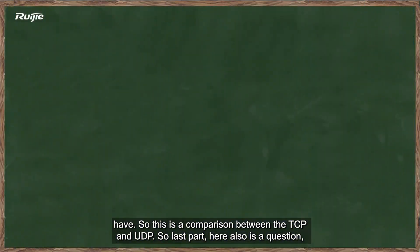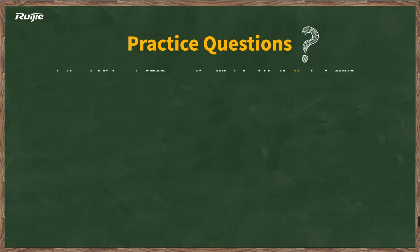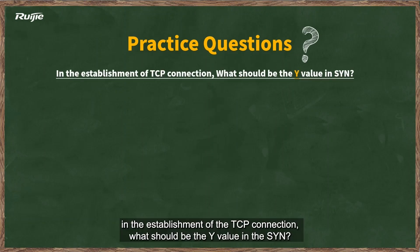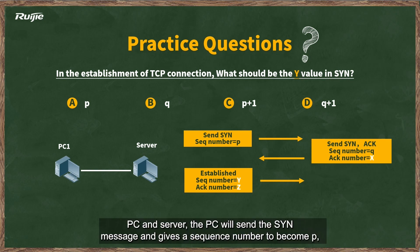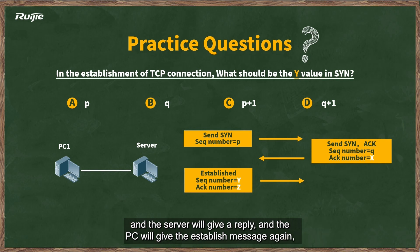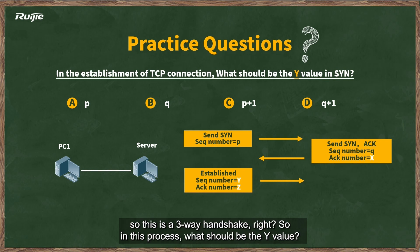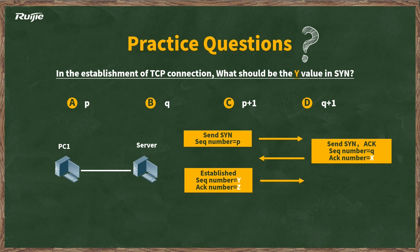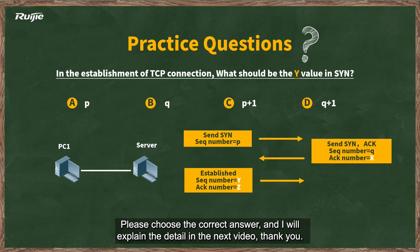In the last part, here is a question: In the establishment of a TCP connection, what should be the Y value in the SYN? The PC sends a SYN message with sequence number P to the server. The server gives a reply. Then the PC gives the established message again — this is a three-way handshake. What should be the Y value? Please choose the correct answer — I will explain the details in the next video.